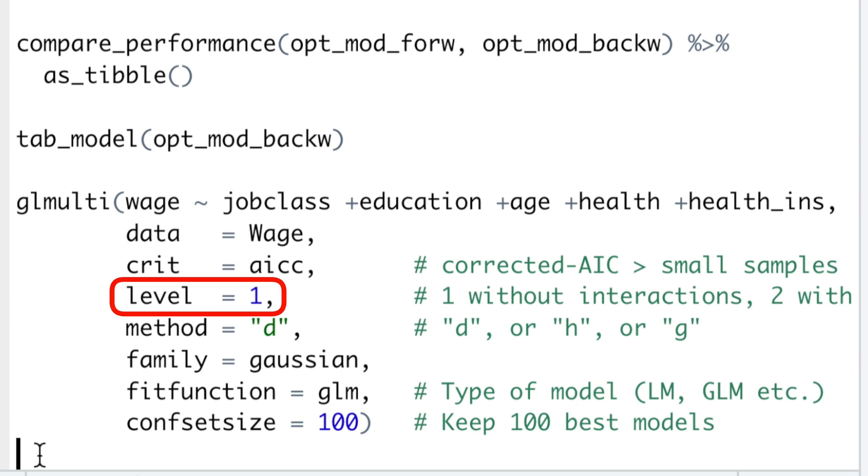The argument level is important. It specifies whether all possible models supposed to be built without interactions, level is equal to one, or with interactions, level is equal to two.